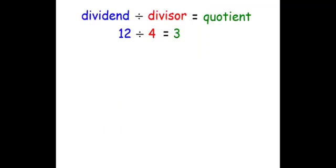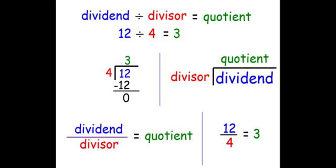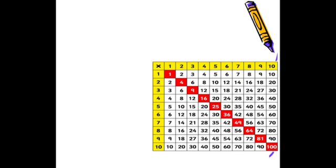So again, we have our dividend which is 12, a divisor which is 4, and a quotient which is 3. Another way of looking at it. And the third way of looking at it. This is getting us closer to what we call the distributive property.